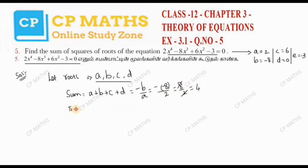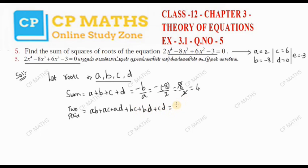Next, the sum of products of roots taken two at a time: AB plus AC plus AD plus BC plus BD plus CD equals c by a. The c value is 6 and a value is 2, so 6 divided by 2 equals 3.